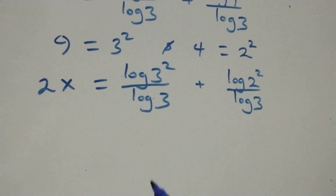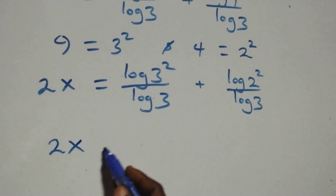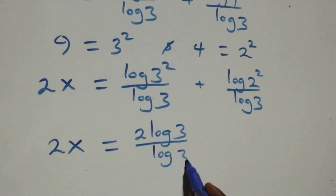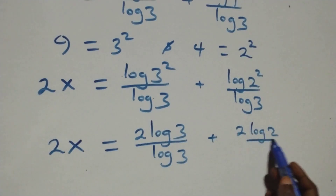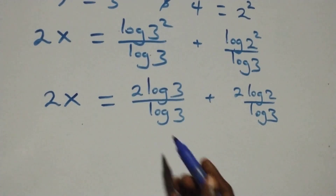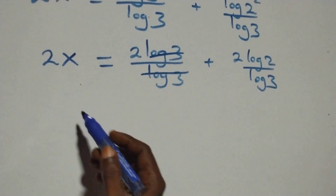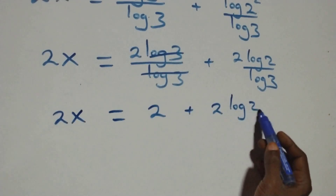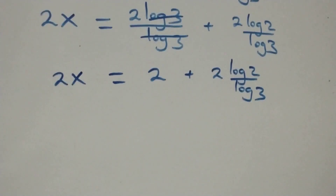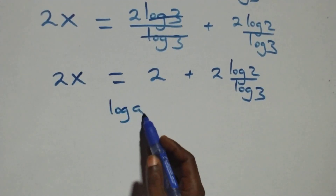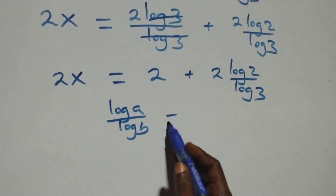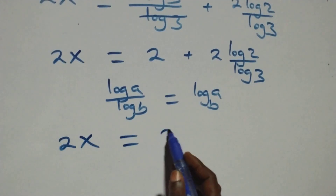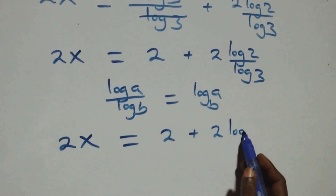Then here we apply the power rule of log: the 2 comes down in each term, and we have 2x equals 2 log 3 over log 3, plus 2 log 2 over log 3. At this here, log 3 cancels with log 3, and what we have becomes 2x equals 2 plus 2 log 2 over log 3. Then here we apply the change of base: when we have log a over log b, this is the same thing as log a to base b. So all we have becomes 2x equals 2 plus 2 log 2 base 3.